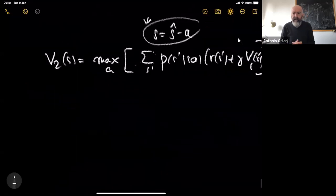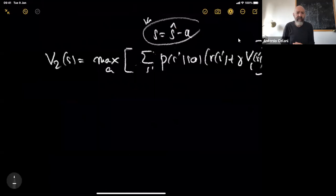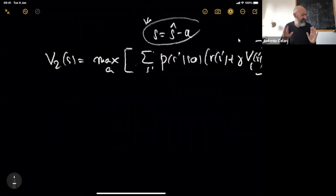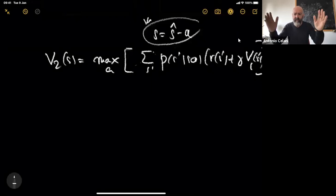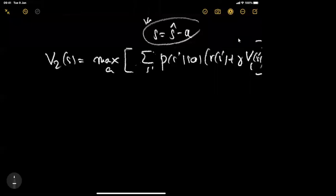Since the second half of the lecture involves a long derivation drawing on Markov processes and linear algebra, we'll take a break a little earlier and reconvene at around 9:55. We'll then make one single long stretch until we're done. Go ahead and prepare your coffees or teas — see you in about 15 minutes.